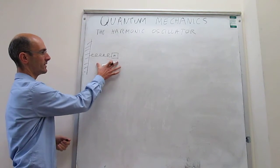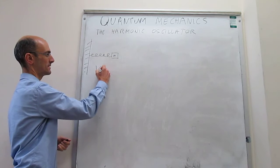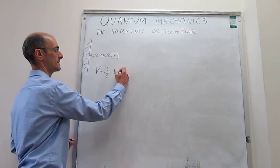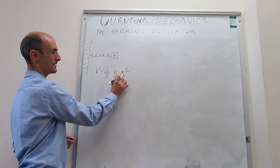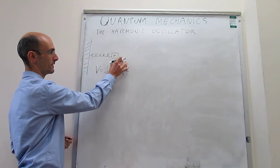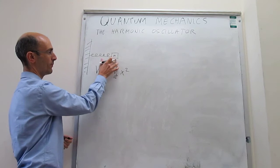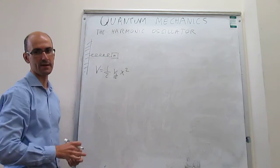The potential energy of this system is Hooke's law, where k is the force constant of that spring, and x is the distance between the position of the mass and the point of equilibrium, which is when the mass is at rest.